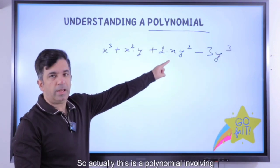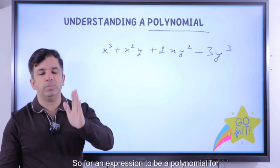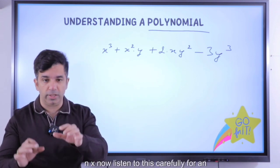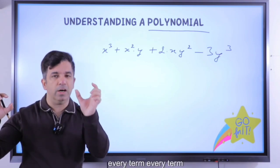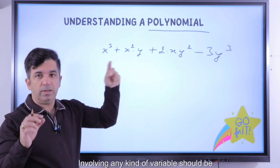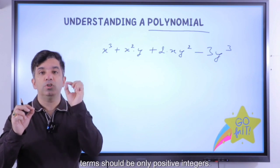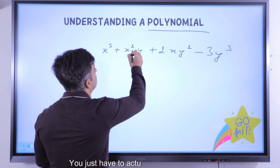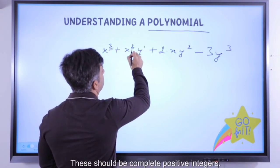For an expression to be a polynomial, listen carefully: every term involving any kind of variable should have exponents — the powers of these terms — that are only positive integers. That is the only condition. You just have to look at these terms; they should be complete positive integers.